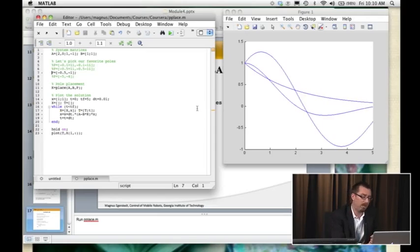Maybe this is a little too slow, so let's pick other eigenvalues: negative five and negative four. This should be dramatically quicker.